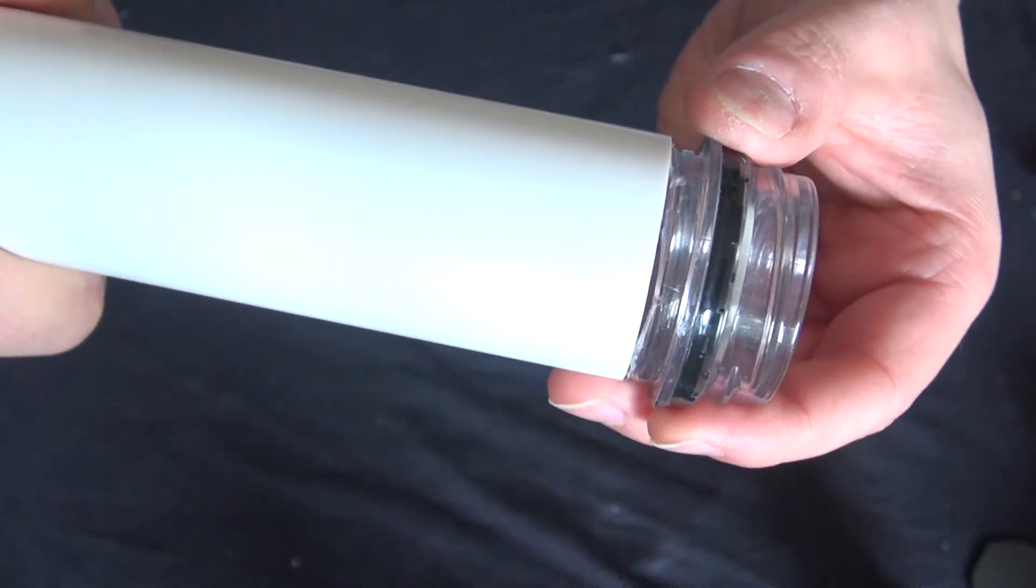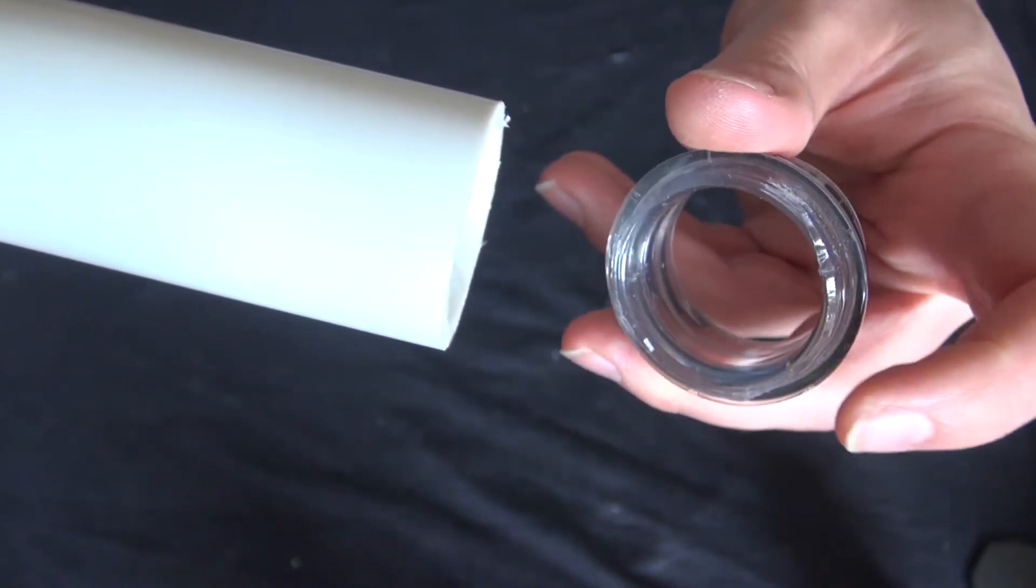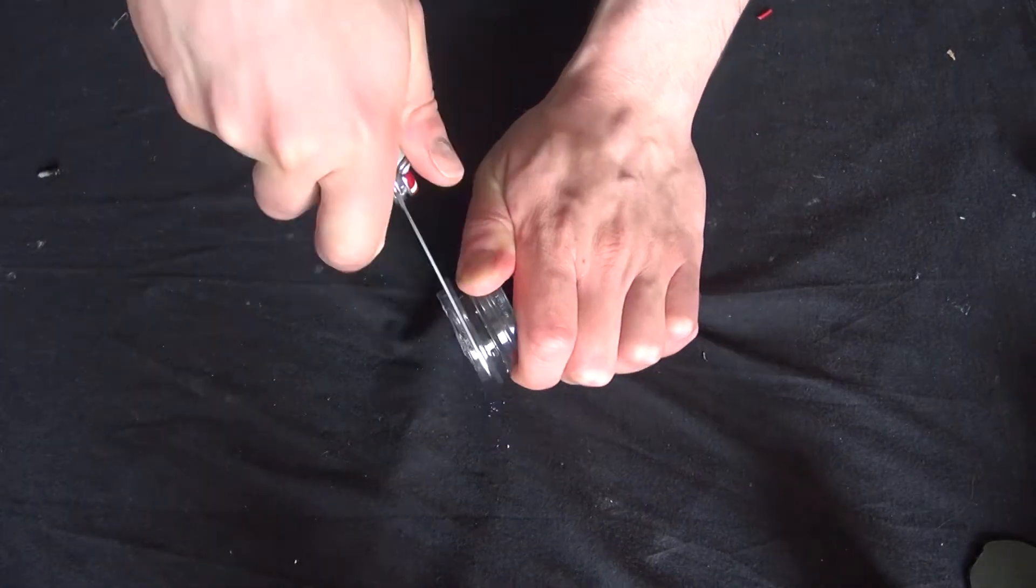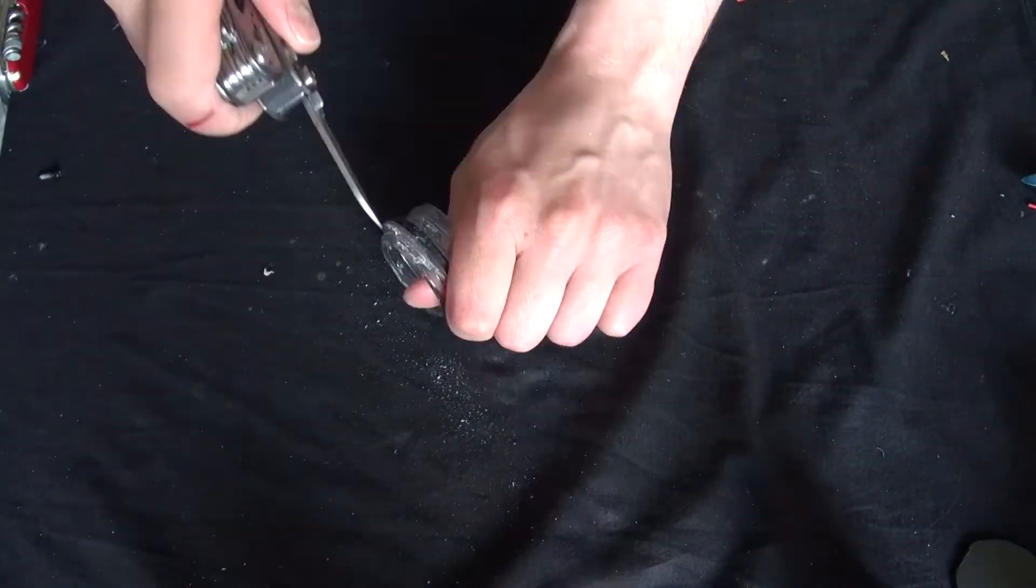And now what I need to do is I need to glue this part of the bottle cap to the PVC pipe but there's some excess plastic that I need to remove. Now mind you when you're doing something like this you're going to need to wear gloves to protect your fingers from cutting yourself.